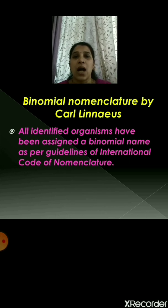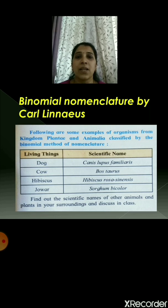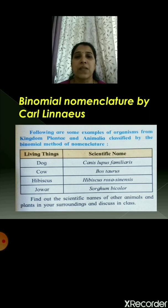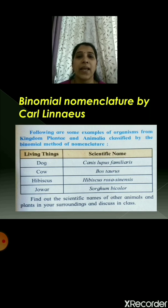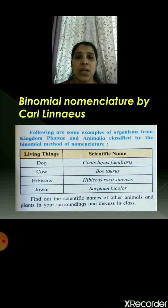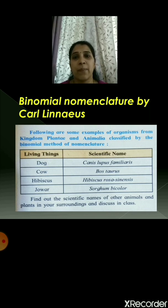Here are some examples of organisms from kingdom Plantae and Animalia classified by the binomial method. In a table of living things and their scientific names: dog is Canis lupus familiaris, cow is Bos taurus, hibiscus is Hibiscus rosa-sinensis, and jowar is Sorghum bicolor. As you can see, these scientific names are quite difficult to remember. Also, 29th April is World Frog Protection Day, and killing or harming frogs is prohibited by the Wildlife Protection Act.